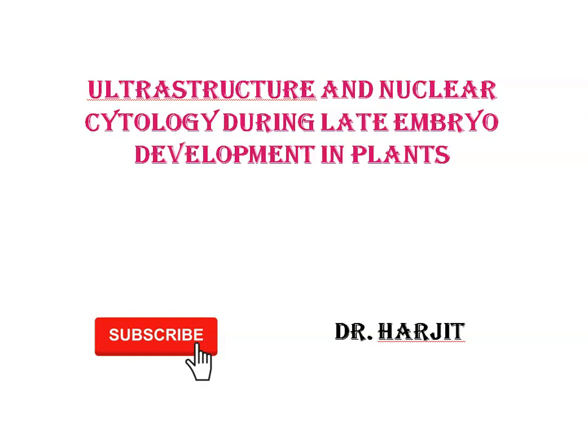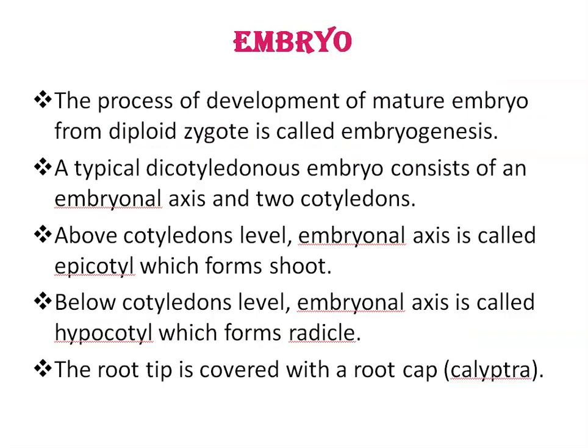Today's topic is Ultrastructure and Nuclear Cytology During Late Embryo Development in Plants. The process of development of a mature embryo from a diploid zygote is called embryogenesis. In a majority of angiosperm plants, the first division of the zygote is transverse, forming a two-celled pro-embryo. The larger basal cell at the micropylar end is called the suspensor cell, and the smaller one away from it is termed the terminal cell or embryo cell.